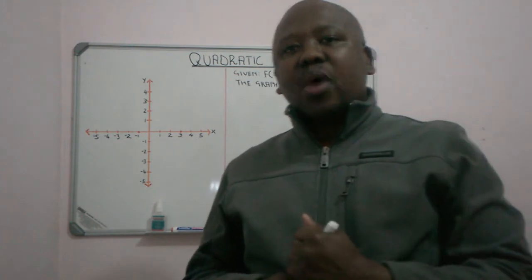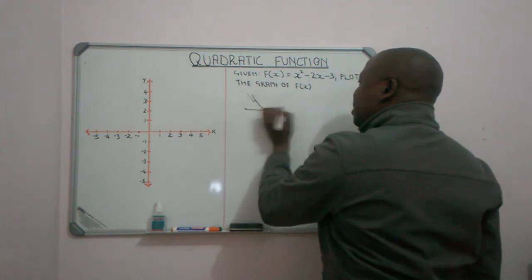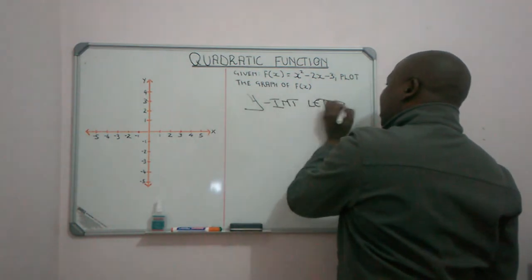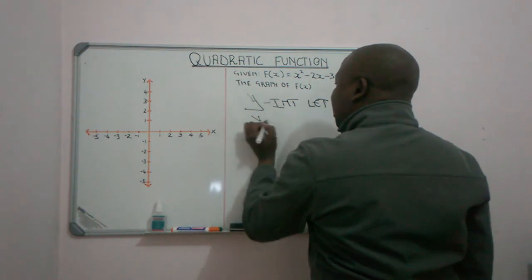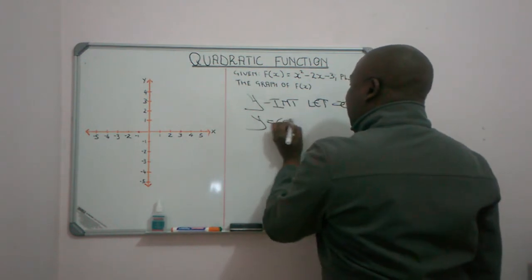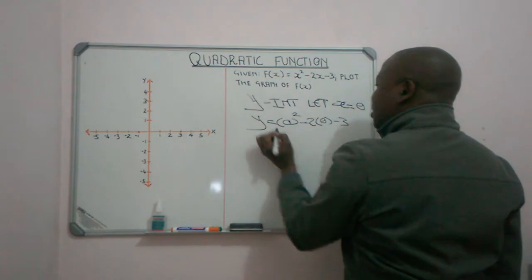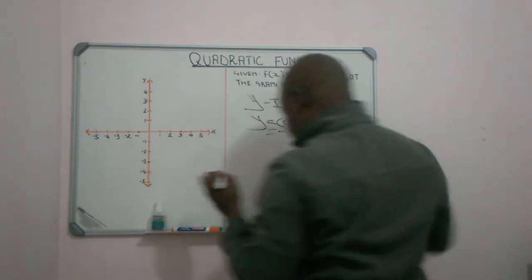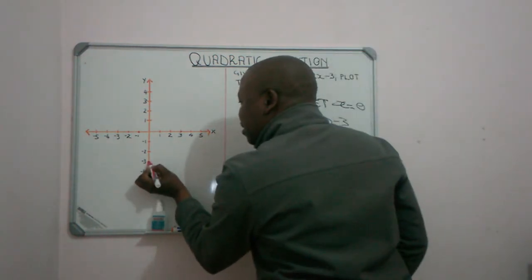For our y intercept, we let x equal to 0. Substituting x = 0 into the equation gives us y equal to 0 minus 0 minus 3, meaning our y intercept is negative 3.